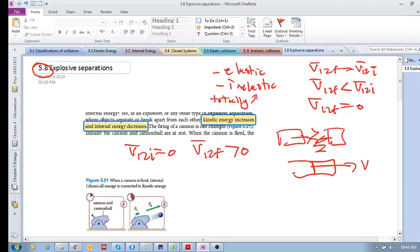As you can see, both the cannon and the cannonball, even though you can't see the cannonball, their relative velocity is zero. Okay, and then there is internal energy inside, say the gunpowder or whatever it is, the explosive powder that's used to propel this cannonball.